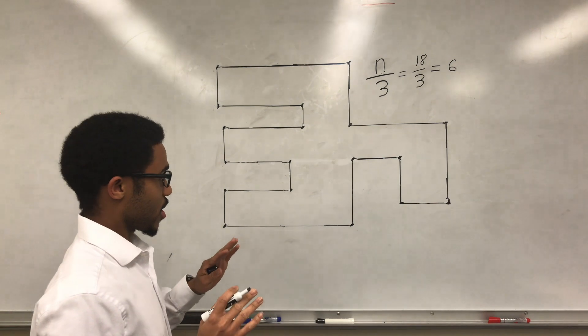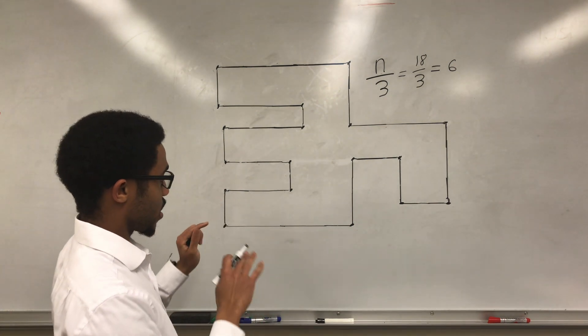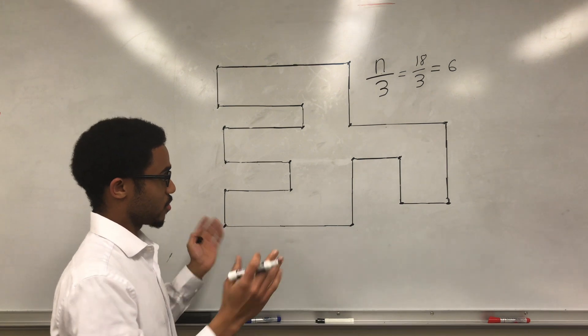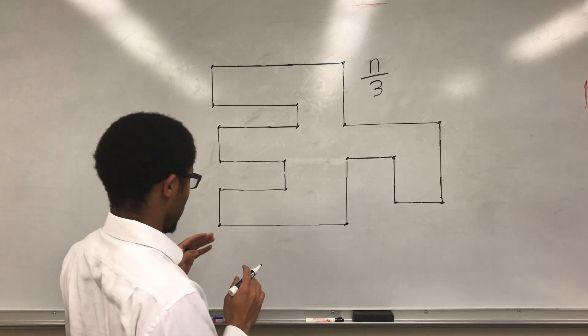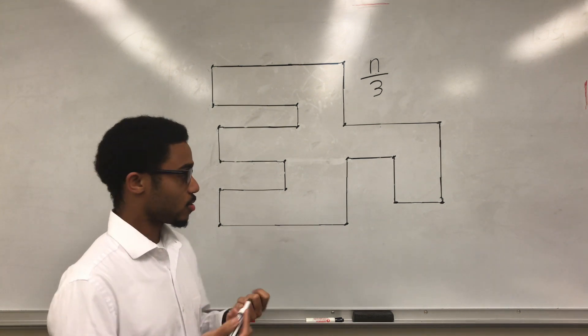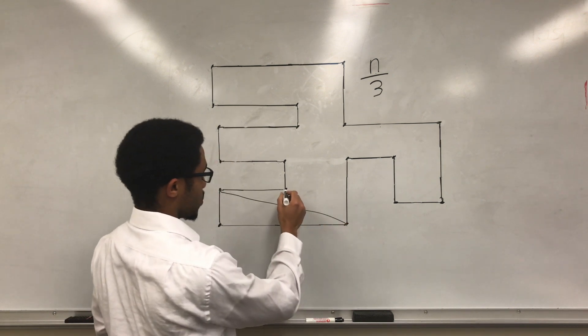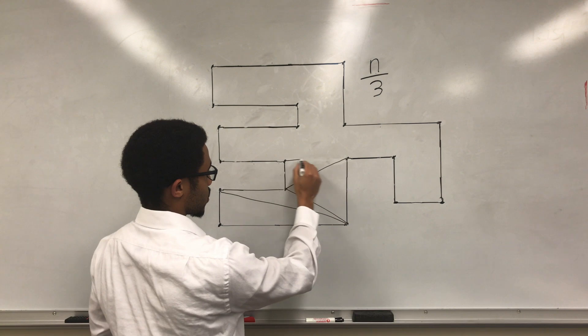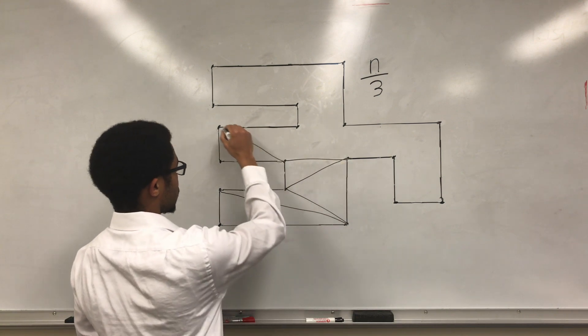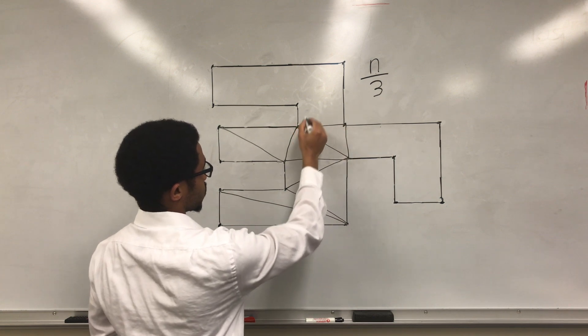So now we're going to figure out how we should arrange the guards within the shape to make sure that every part of the shape is covered. So first, we'll divide the polygon into sections containing only triangles. What we're doing is we're taking lines and connecting all the vertices of the polygon.